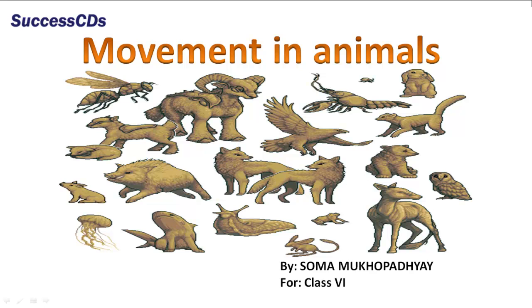All animals show movement. The ability to move has been used as a criterion to distinguish plants and animals. Plants apparently do not show movements in general, while animals move more freely.